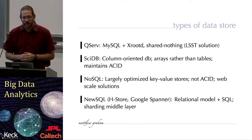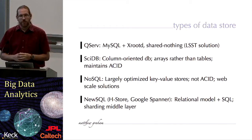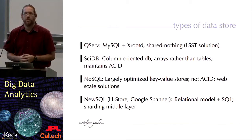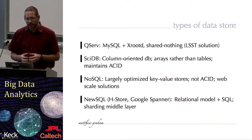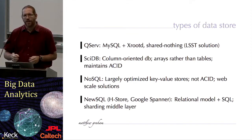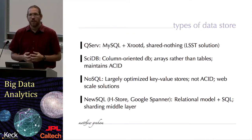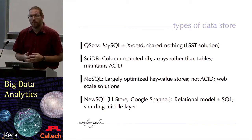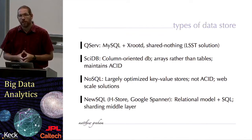Moving away from the relational model even further, in recent years there's been the NoSQL movement. The idea is to reject many of the precepts of relational databases and move to something far more performant — essentially a glorified hash table. These are largely optimized key-value stores, where the type of data object stored is a key and a value, so large lookup tables. They're not ACID, but they are very good for web-scale solutions. The Hadoop project has produced a number of these, and they came out of the Google project with MapReduce and related technologies.